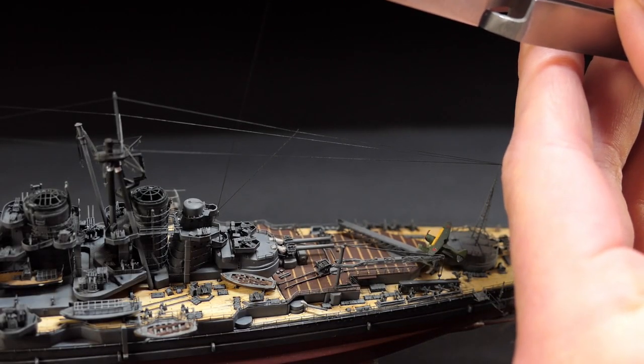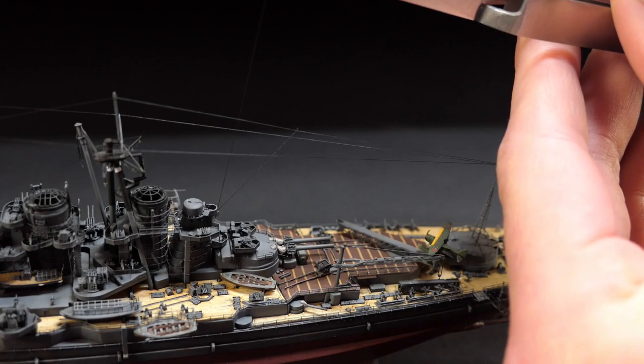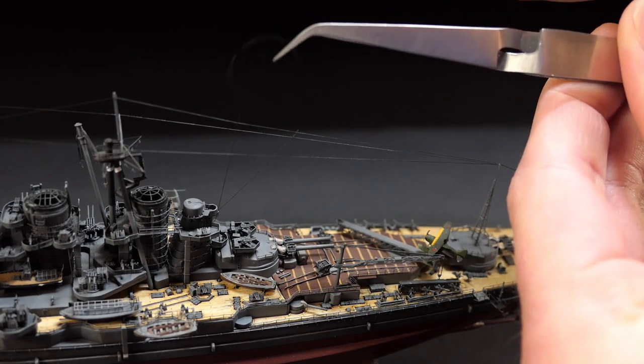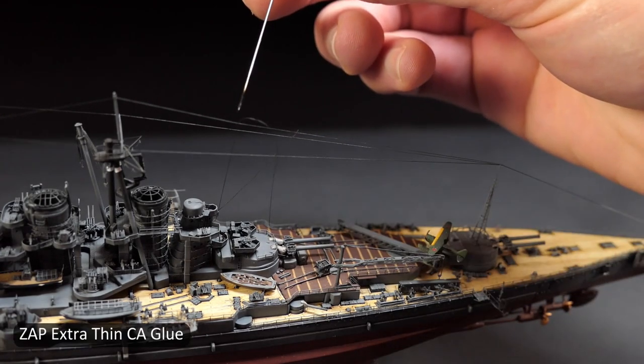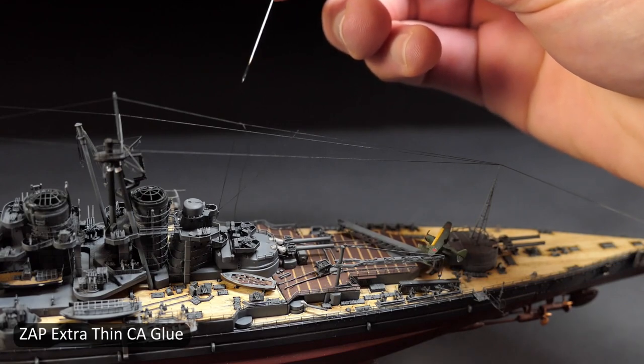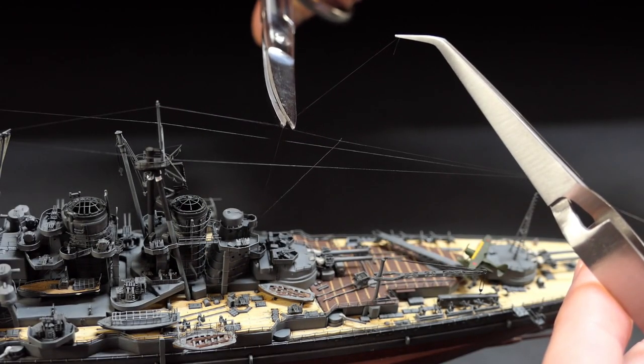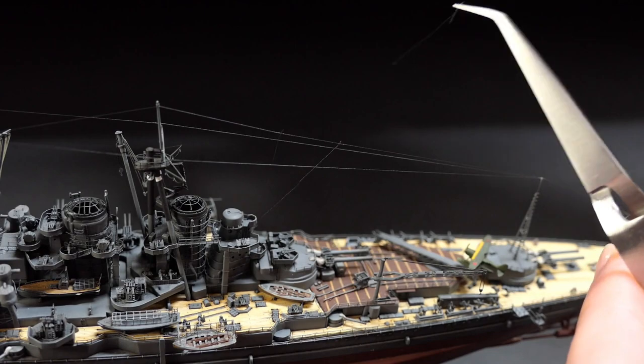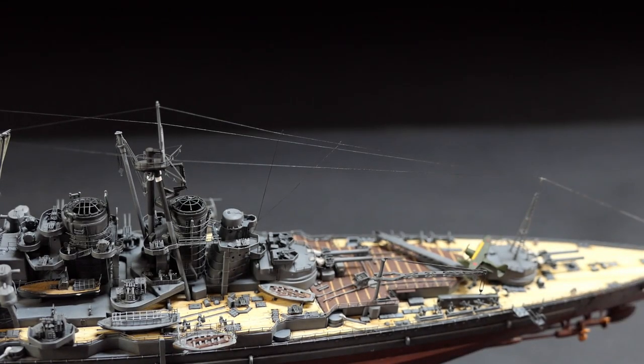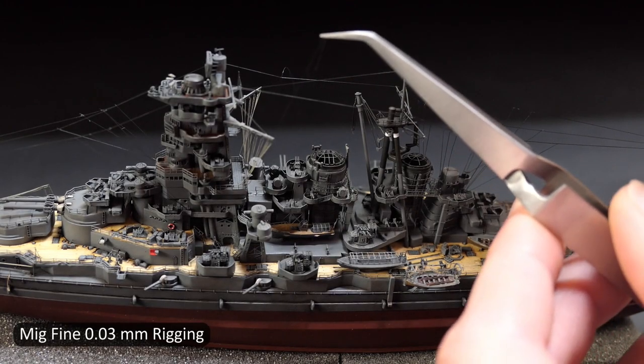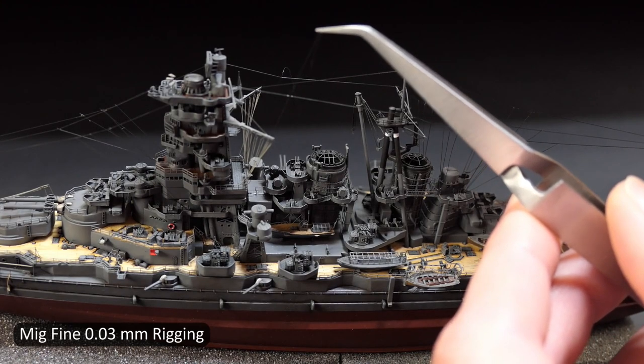In some instances, on the railings, I would actually thread the rigging through the railing, hold it in place while I put a dab of super glue on the railing itself. At such a small scale, you don't necessarily need to tie it in place, just getting it run through the railing is sufficient enough.